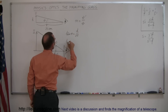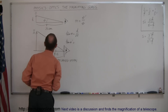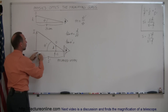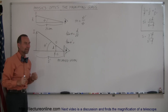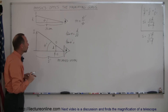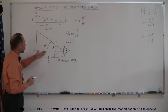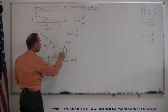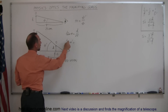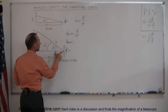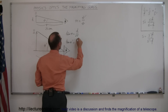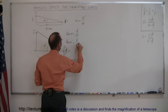The tangent of theta prime is equal to the opposite side over the adjacent side — that would be the height of the image divided by the distance to the image. Of course we don't know what the height of the image is or what the distance to the image is. But what we can do instead is look at this triangle right here: tangent of theta prime would be equal to the height of the object divided by the distance here, which is equal to the focal length of the lens. So that would be equal to h over f.